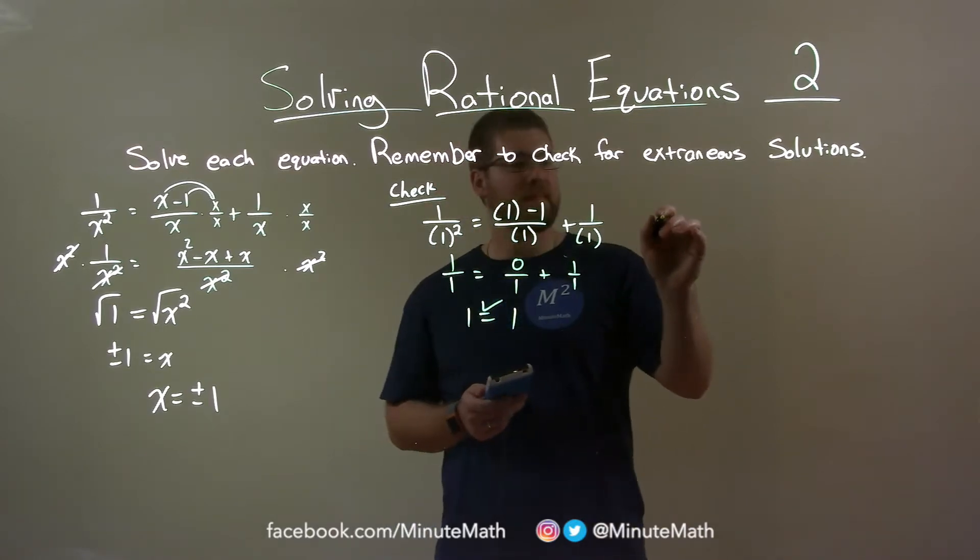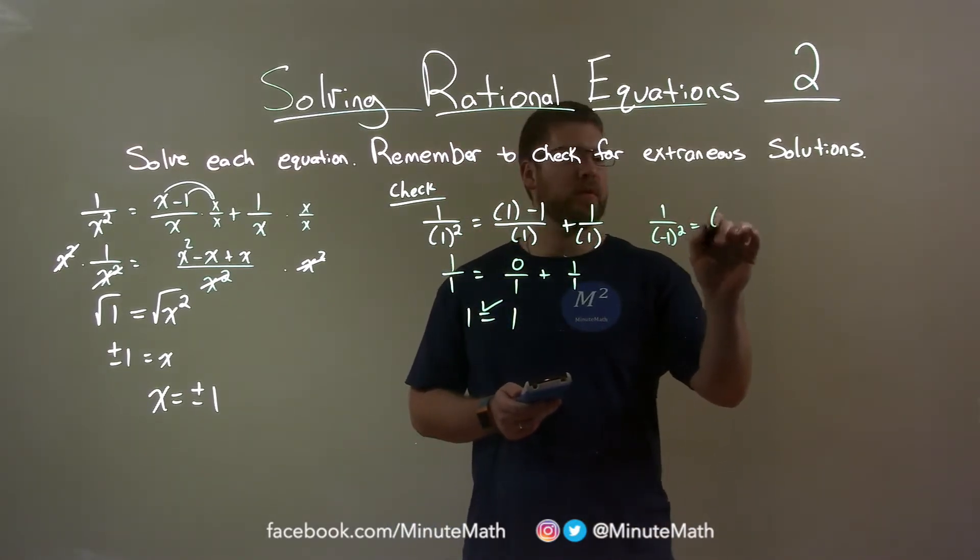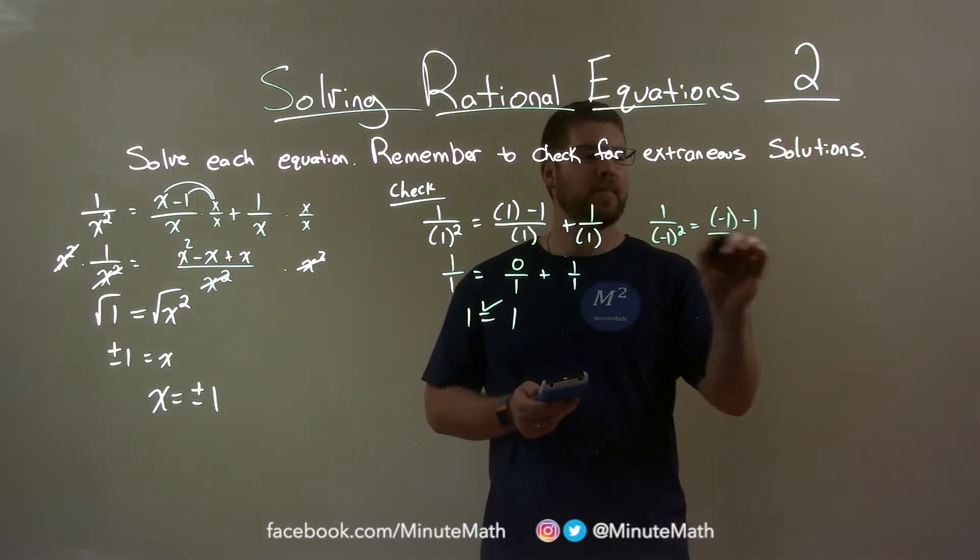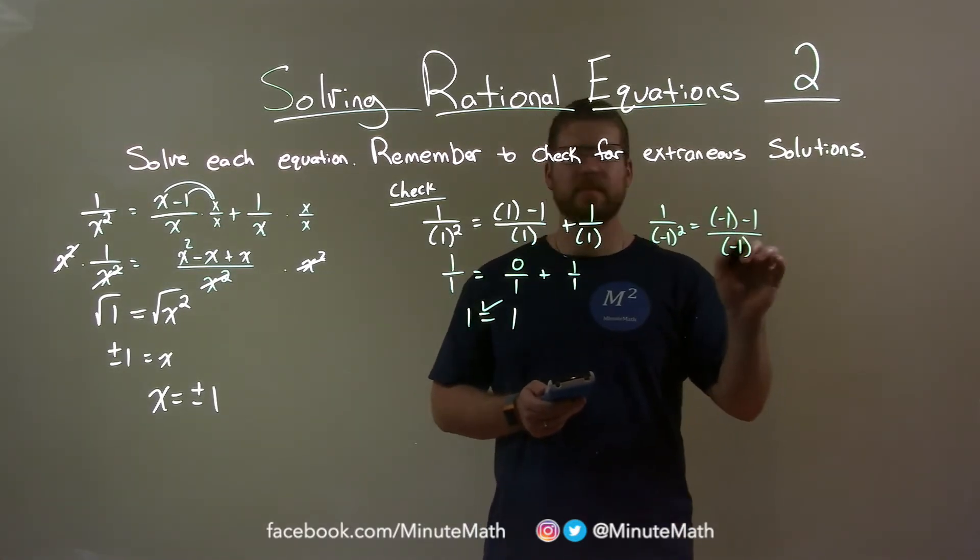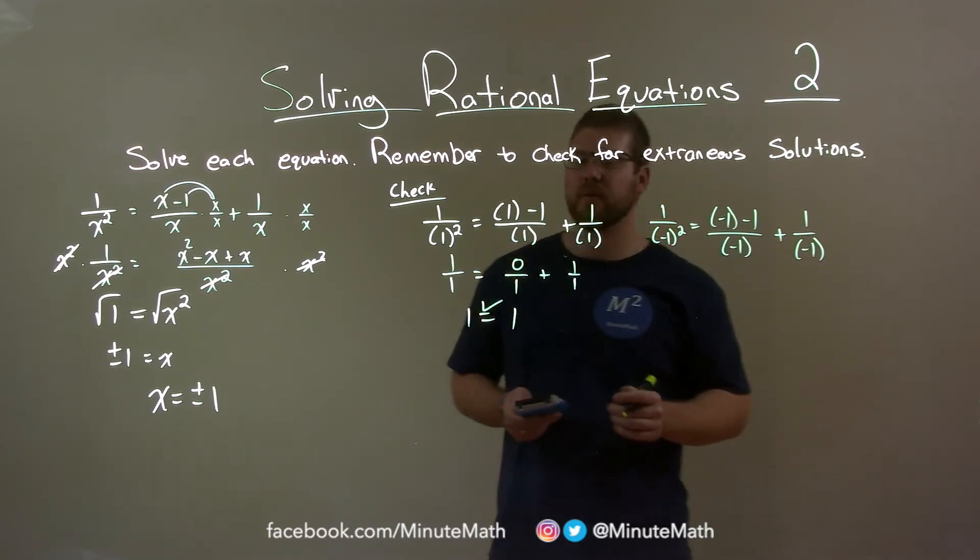Now let's check negative 1. 1 over negative 1 squared equals negative 1 minus 1 over negative 1 plus 1 over negative 1.